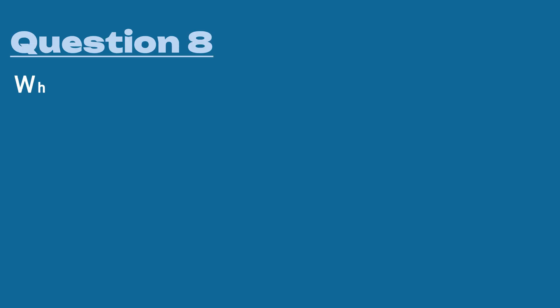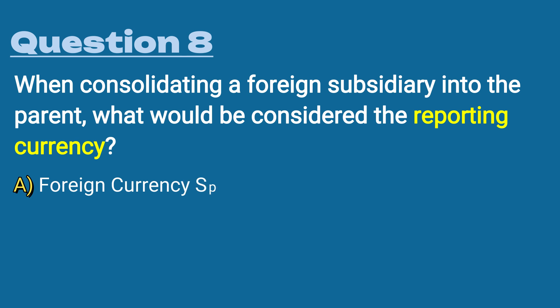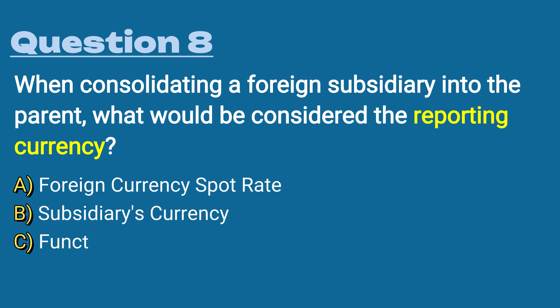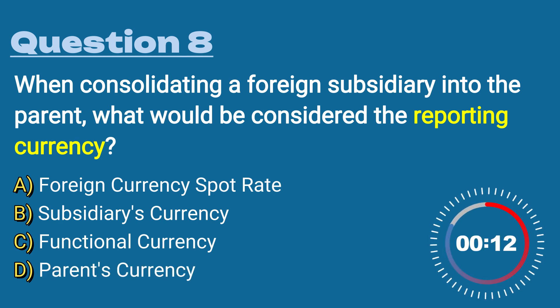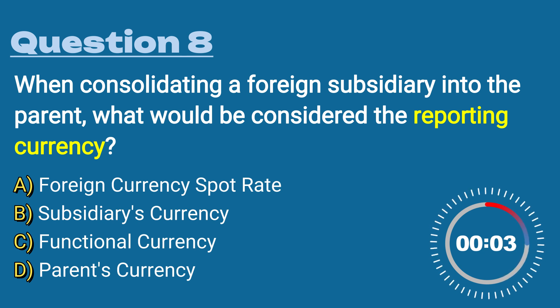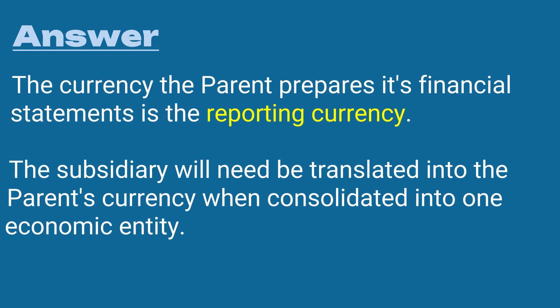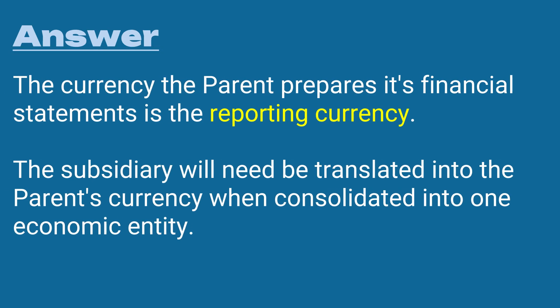Question eight: when consolidating a foreign subsidiary into the parent, what would be considered the reporting currency? A) foreign currency spot rate, B) subsidiary's currency, C) functional currency, or D) parent's currency. The answer is D) the parent's currency. The currency the parent prepares its financial statements in is the reporting currency. The subsidiary will need to be translated into the parent's currency when consolidated into one economic entity.